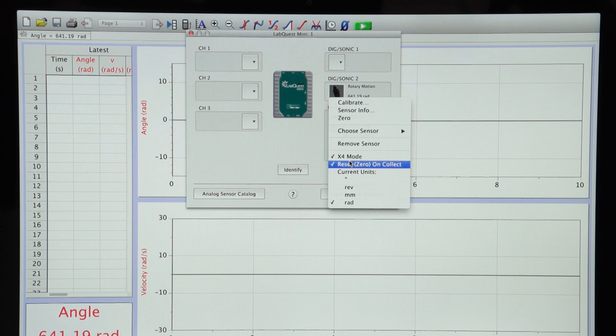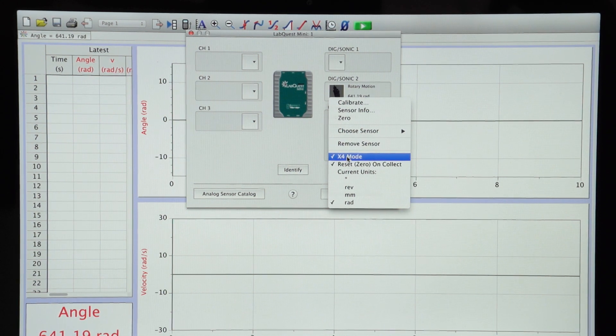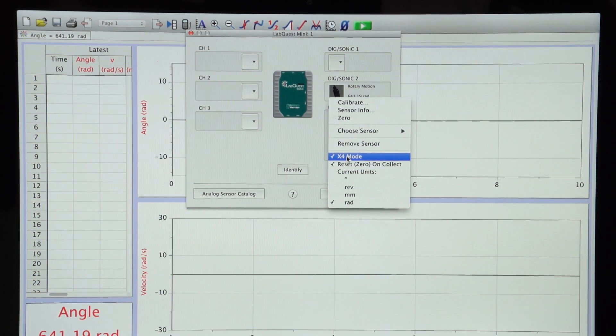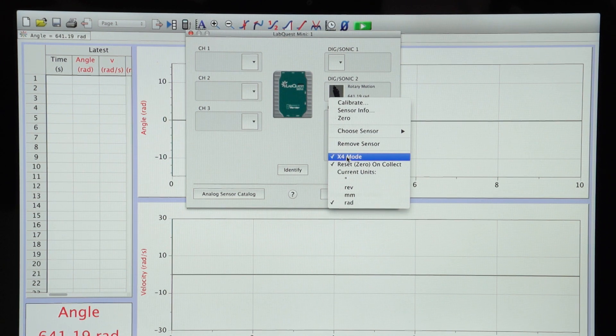So the X4, that means the quarter of a degree resolution. You have a limit of seven and a half revolutions per second at that.